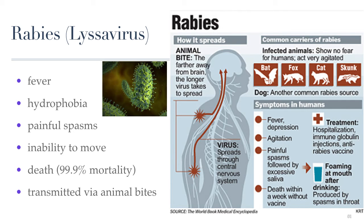Rabies is a viral disease that causes inflammation of the brain in humans and other mammals. Early symptoms include fever, but soon other symptoms appear like depression, violent movements, uncontrolled excitement, fear of water (hydrophobia), or an inability to move parts of the body, which can lead to confusion, loss of consciousness, and death. Once symptoms appear, the result is nearly always death. The time between contracting the disease and the start of symptoms is usually one to three months but can vary from less than one week to more than one year, depending mostly on the distance the virus must travel through the nerves before reaching the central nervous system.